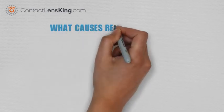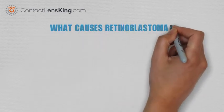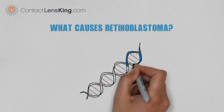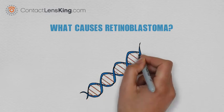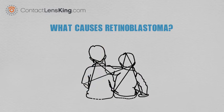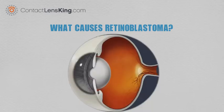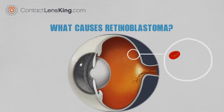What causes retinoblastoma? Retinoblastoma is a genetic disorder that usually affects children. It impacts the retina's nerve cells, causing them to mutate.